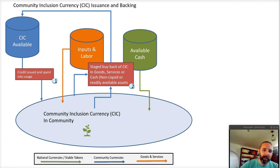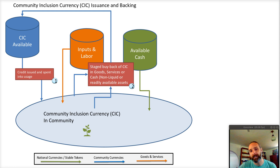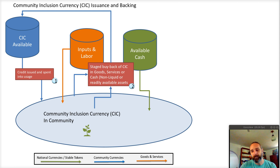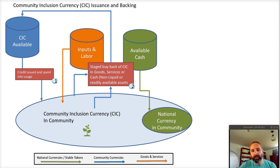If there is available cash, can that cash also act as a backing? It could be that people really need petrol, for instance, and there's no way to get it with local currency. The idea of having some available cash backing — in this case it's just us buying the vouchers off the community as a relief — means some national currency is going into the community.